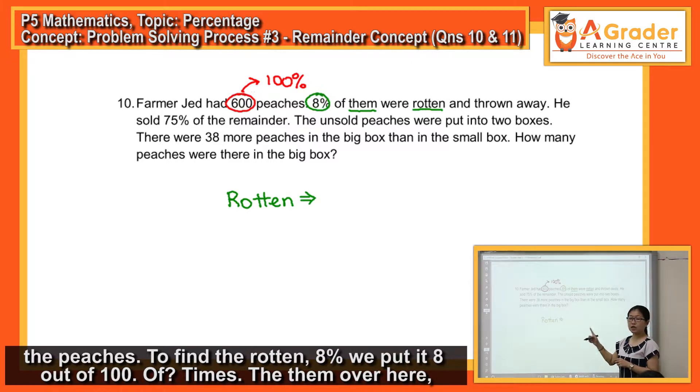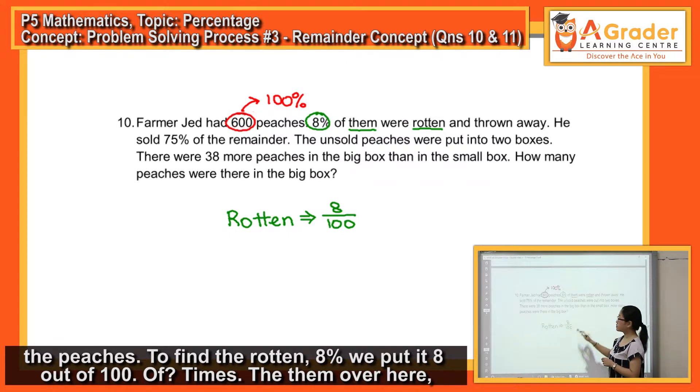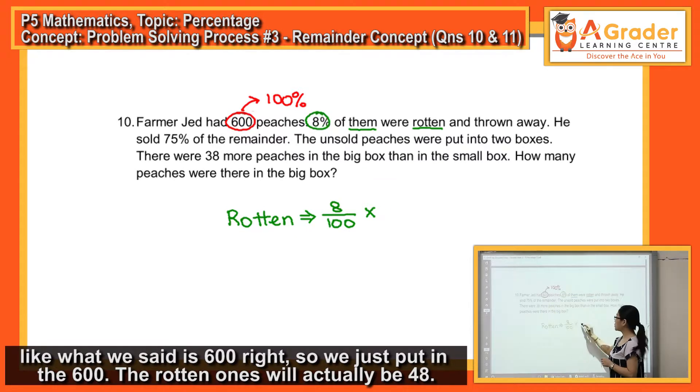Eight percent, I put it 8 out of 100, times the 'them' over here. Like what you said, is 600, right? So you just put in the 600. The rotten ones will actually be 48.